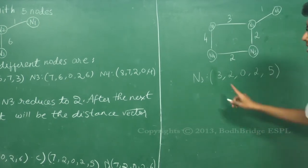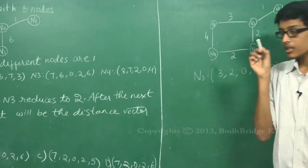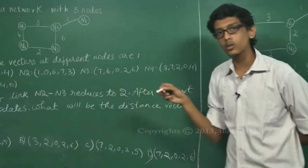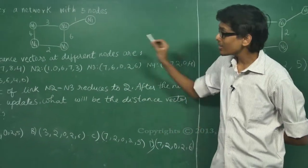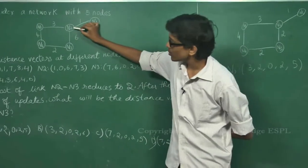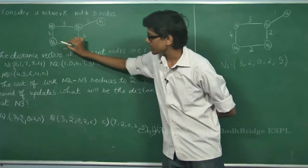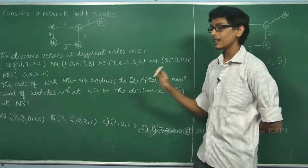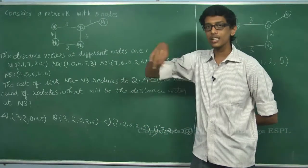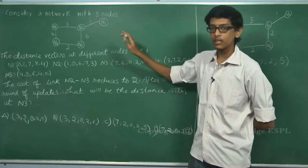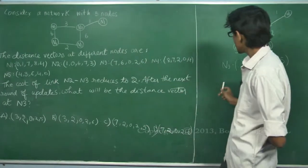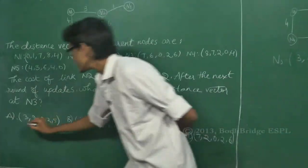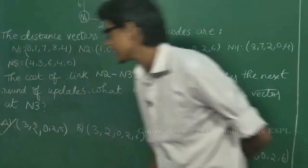So this is the distance vector at the next round of updates. If this change was made between two rounds of updates, only the values at N2 and N4 — the neighbors of N3 — would have changed. But since the question asks for the distance vector after the next round of updates, everything would have been shared and updated. So the correct option is Option A: 3, 2, 0, 2, 5.